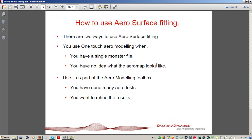How do we go about using aerosurface fitting? There are two ways. The first is using one-touch aero modeling — you use this when you've got a brand new race car, no idea what the aeromap looks like, and you've got a single monster file. One-touch aero modeling really comes into the fore when you need a rough and ready approximation of what the aeromap looks like. It uses some fixed parameters, runs the optimization, and gives you a rough idea. That's available throughout the ChassisSim product range. Alternatively, you can use it as part of the ChassisSim aero modeling toolbox when you've got many fine slivers of the aeromap to consider and want to refine the results.